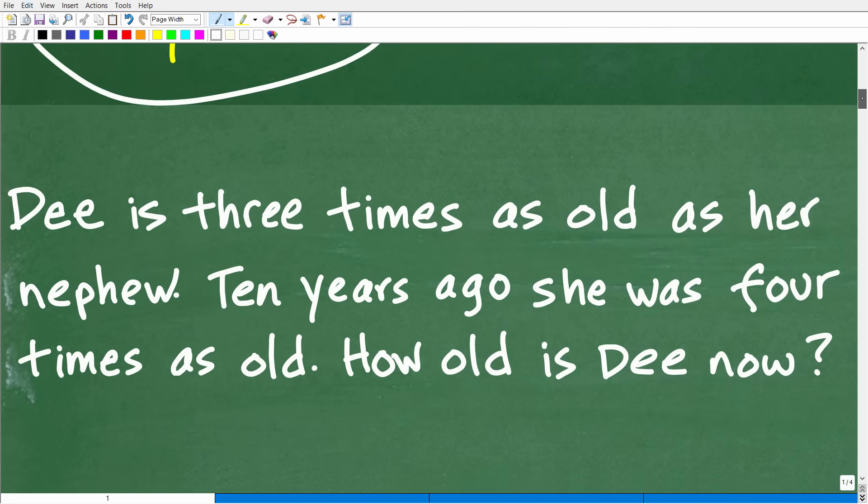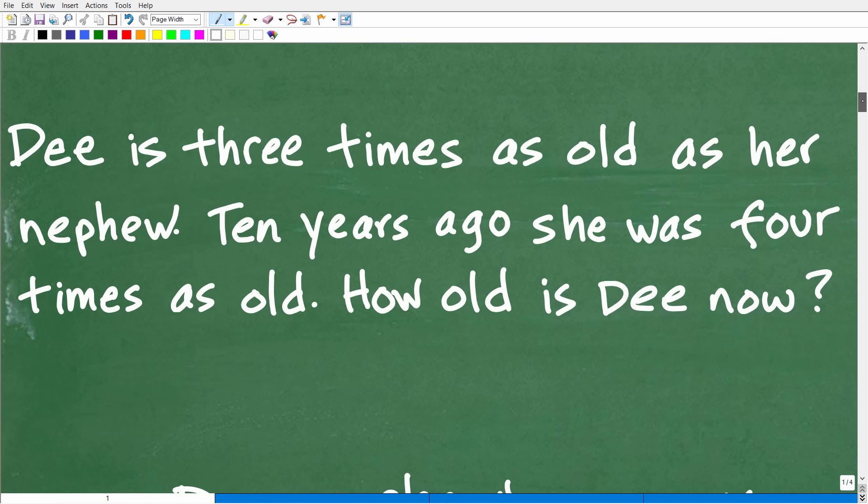Okay, so Dee is three times as old as her nephew. Ten years ago, she was four times as old. How old is Dee now? Well, we're reading the problem again. And if you notice, I've read the problem at least three times. And this is a rule that you should follow. So when you're dealing with any math word problem, whether it's algebra, word problem, geometry, it doesn't make a difference. Read a problem at least three times. Make sure your brain has soaked in all the information and you truly understand the question.